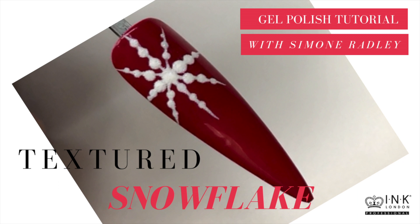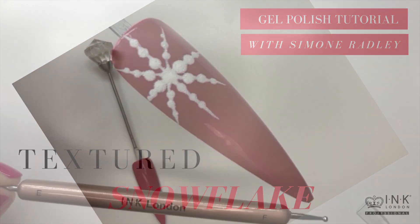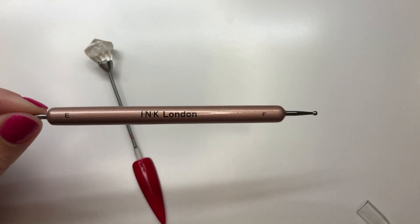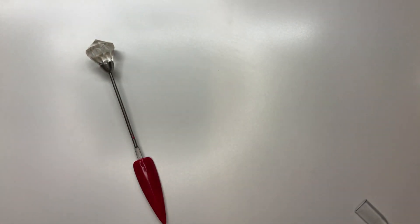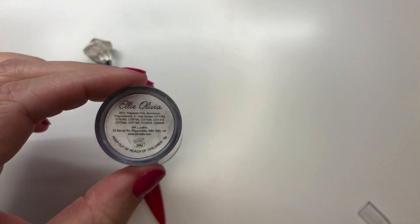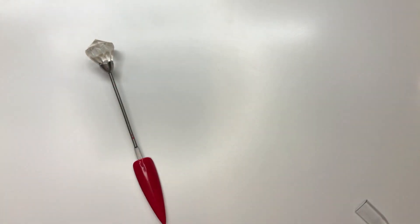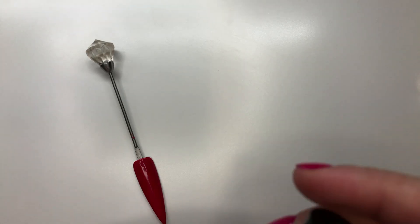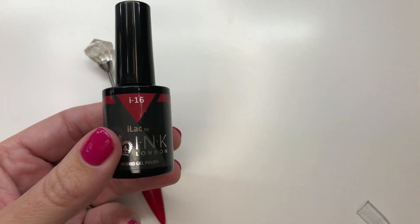Hi everyone, in this video I'm going to show you how to do a textured snowflake design. For my design I've used the Ink London dotting tool, Ellie Olivia glitter, a base color of iLac i16, the artiste brush, and I painted my design in iLac i156.